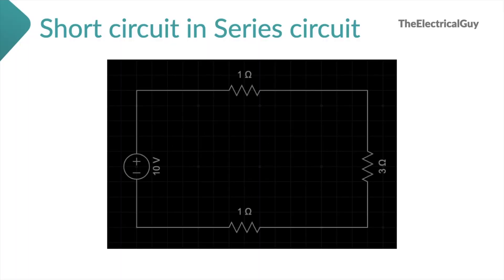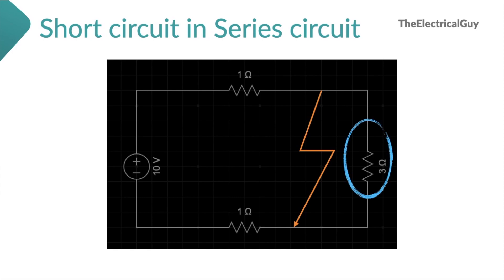Short circuit has different effects in series and parallel connections. Consider a series circuit with a short circuit added. This short circuit has created an unwanted path of very low resistance, eliminating R2 from the circuit. Therefore the total circuit resistance decreases and the circuit current increases. The circuit is not designed to carry this high current — for instance, if the circuit is designed to carry 10 amperes and suddenly because of a short circuit the current becomes 50 amperes, the equipment and conductors are not meant for that, and the system will be damaged.